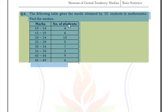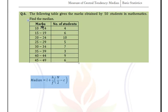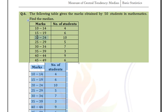The following table gives the marks obtained by 50 students in mathematics. Find the median. We observe classes 10–14, 15–19, and so on. Since the ending point is 14 and the next class starts at 15, the classes are inclusive and must be converted to exclusive form.